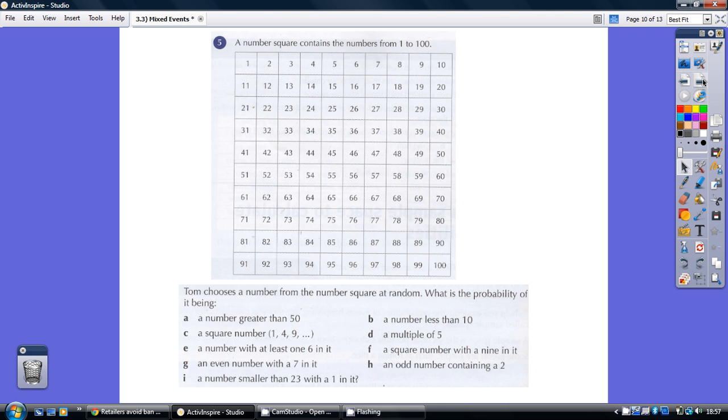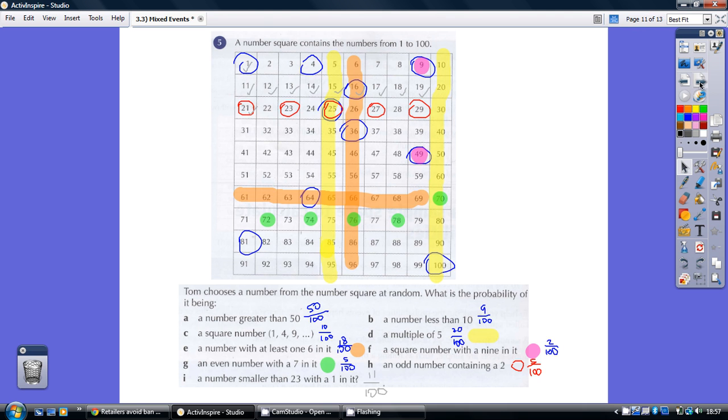Question five, have a go. So again, we know it's going to be out of 100, so all the denominators, all the bottom numbers, are 100. And then it's just a question of working through and adding up the appropriate number to put on top as the numerator. So numbers greater than 50? Well, there are 50 of them.